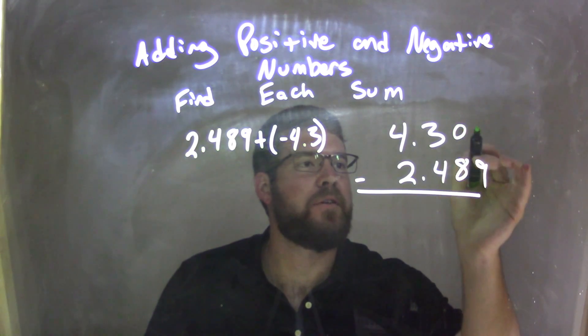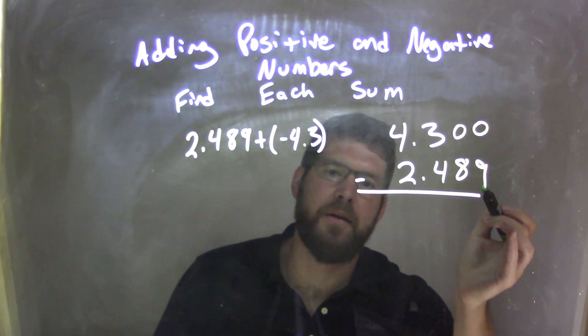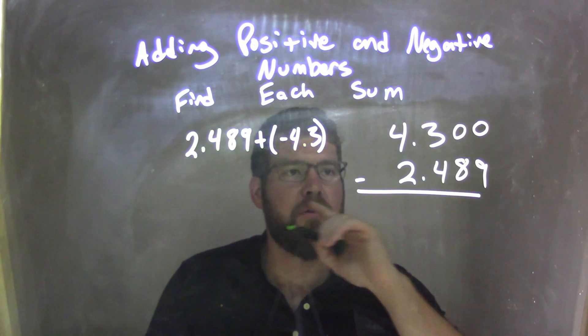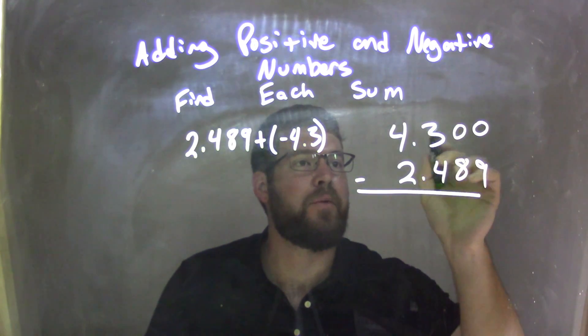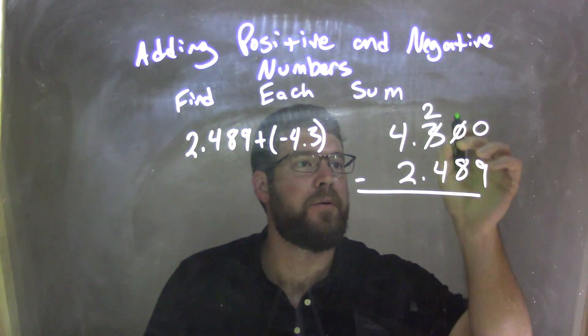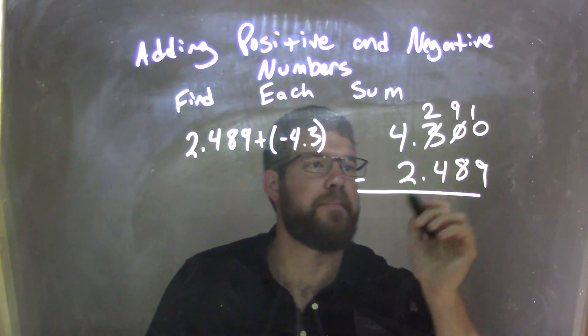Well, I need my place values to be 0 and 0 here. And of course, I can't do 0 subtract 9 using this method, so I kind of have to bring over that 3, so that becomes 2.910. There we go.